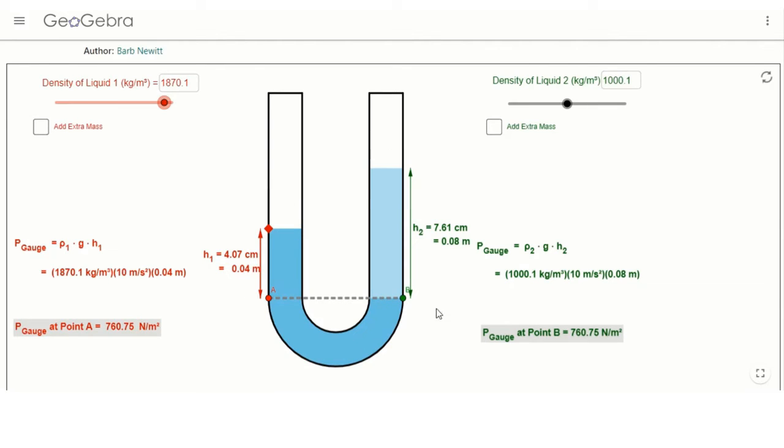So now this side's liquid is more dense and it's kind of like filling up this whole bottom part, and you have a difference in height. So from here to here is the more dense liquid, from here to here is the less dense liquid. So the pressure gauge at point A, at this point, there's going to be this much—760 pressure pressing at this point. Now at the bottom here is all the same liquid.